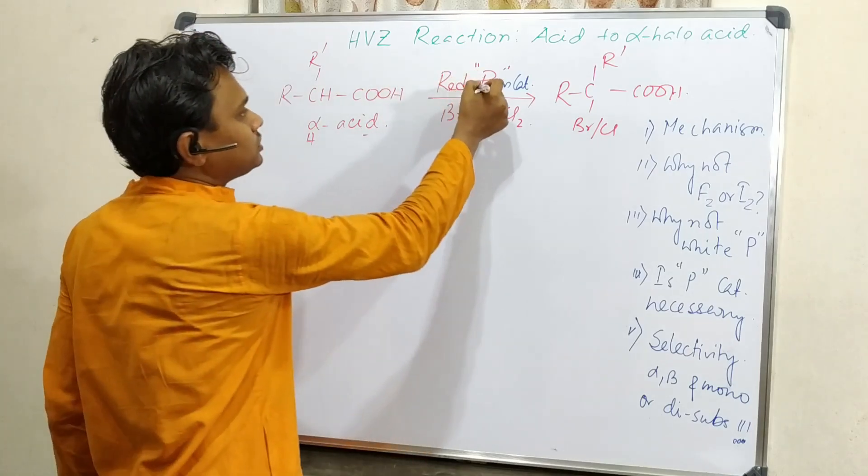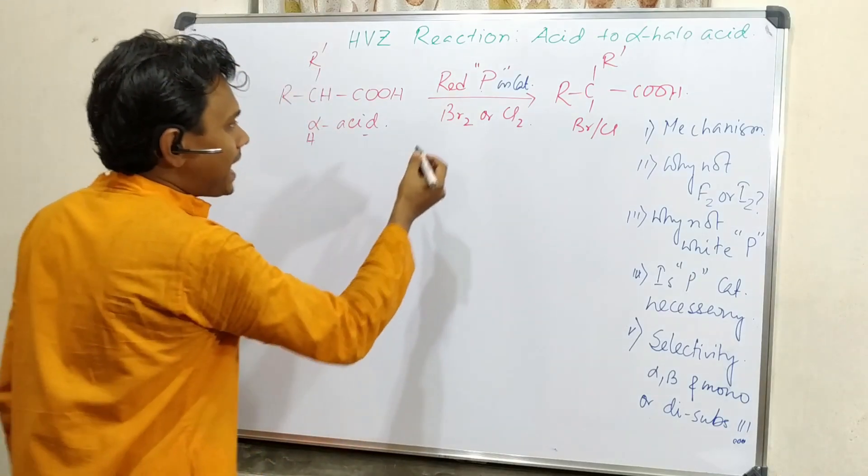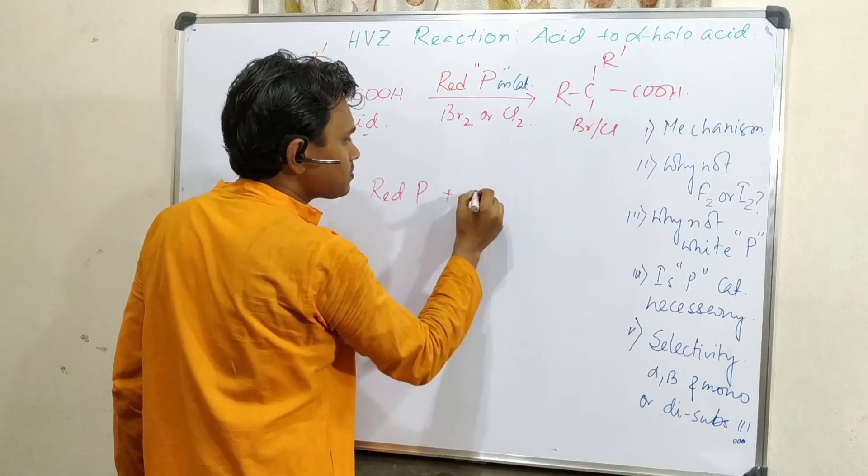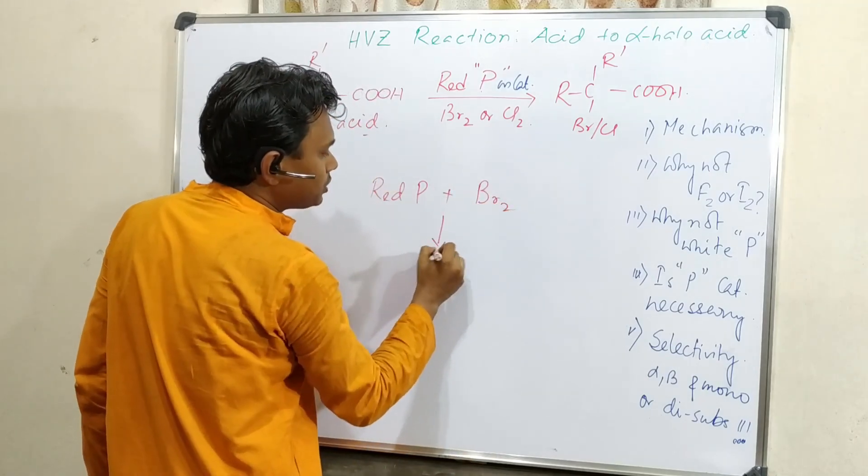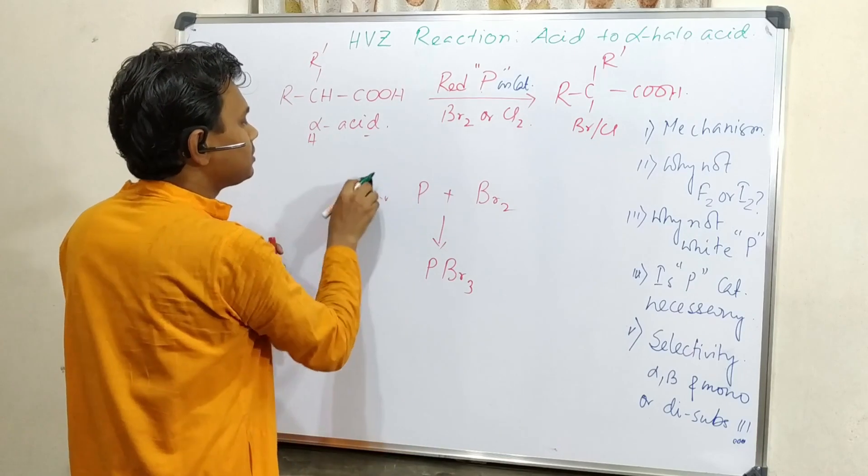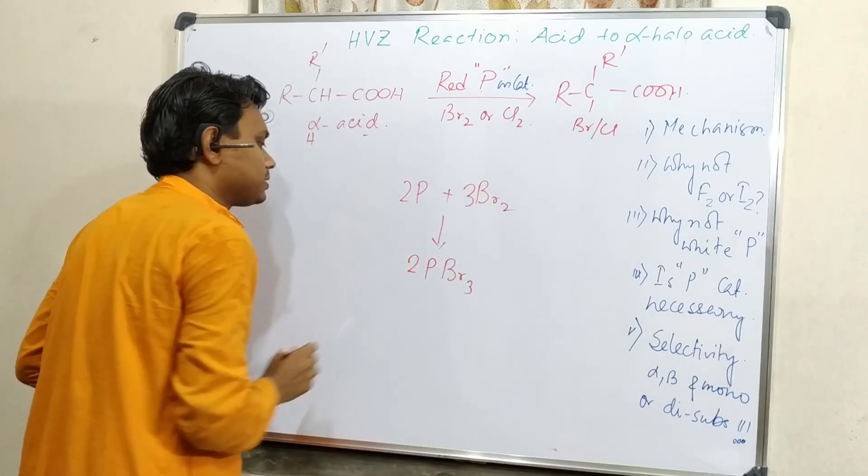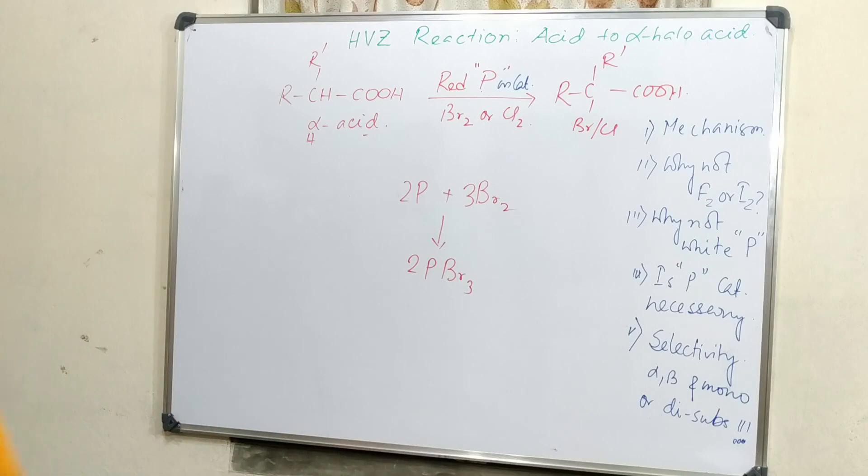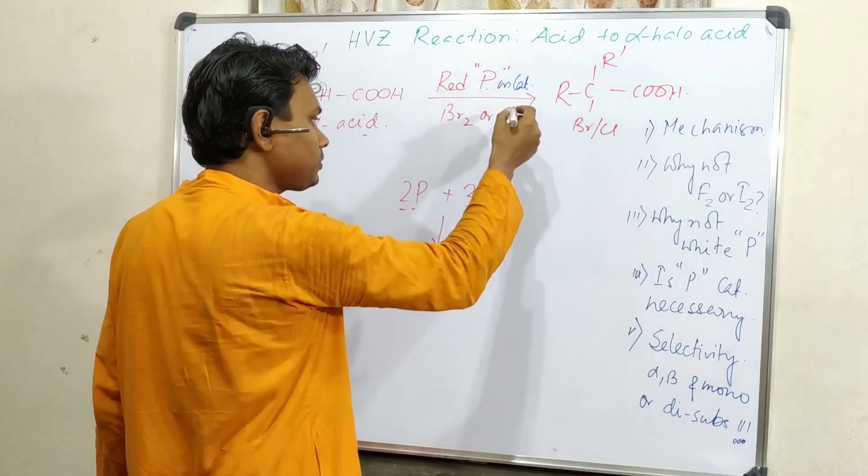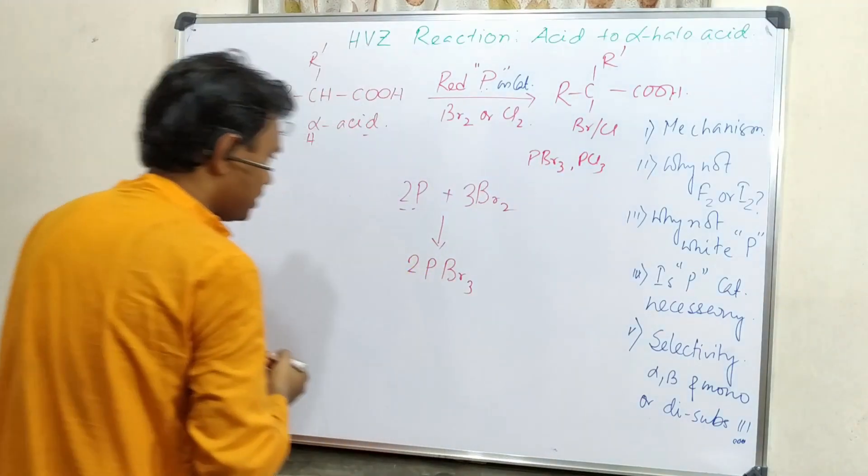From the reaction you can see red phosphorus is a catalyst. So first discuss what red phosphorus is doing. Actually red phosphorus is reacting with bromine or chlorine. Let's take bromine. It produces PBr3. If we balance the reaction, that is 2 phosphorus, 3 bromine, that is 2 PBr3. And that is acting as a catalyst. So instead of this phosphorus, we can take PBr3 also. We can take PBr3, PCl3, etc.